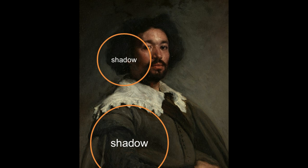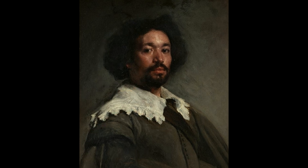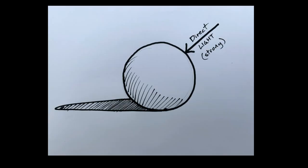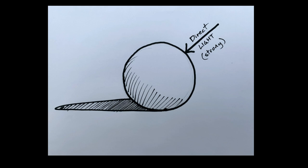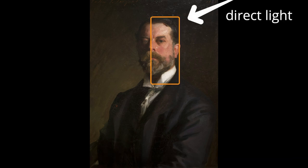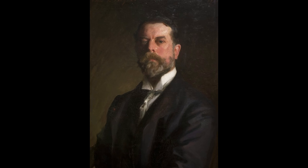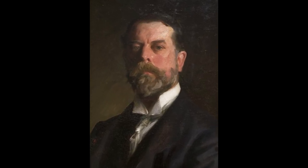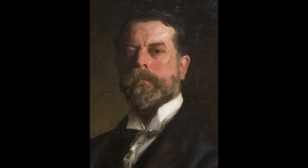Hard edges occur where there is direct light — this could be the sun or a man-made light source. Any area directly lit by the light source gives a much higher proportion of hard edges. The light is hitting the subject directly — hence 'direct light' — it's very strong, fully illuminates the subject, shows all the detail of the area being lit, and creates those sharper, harder edges. You could call this sharp focus.